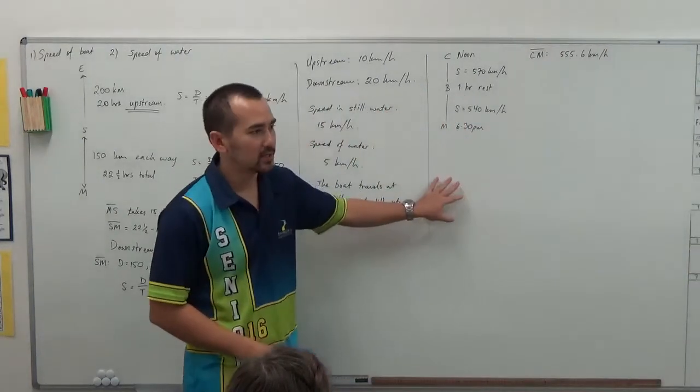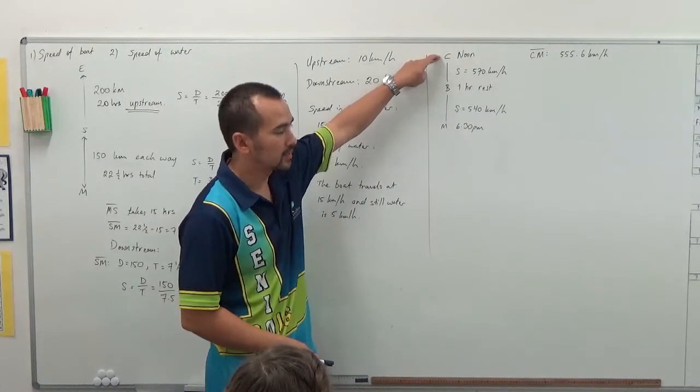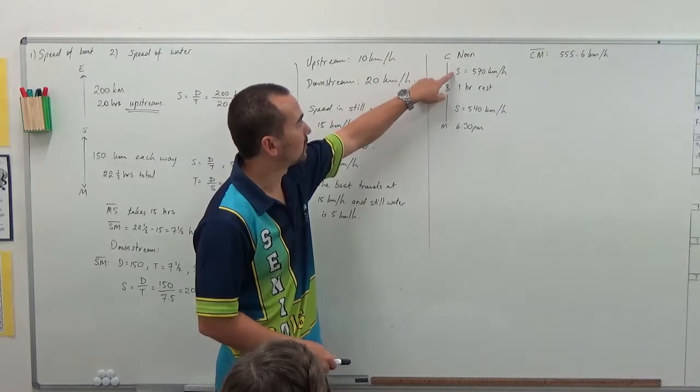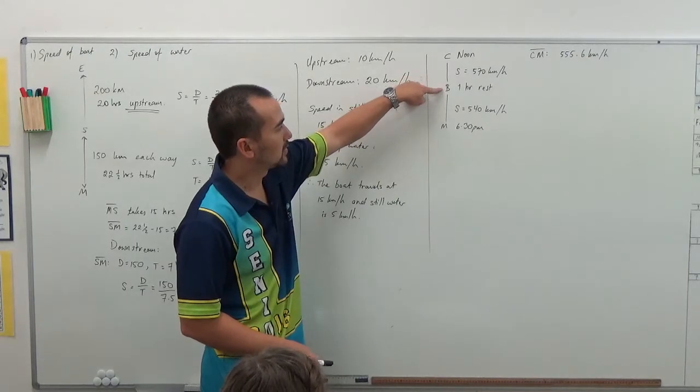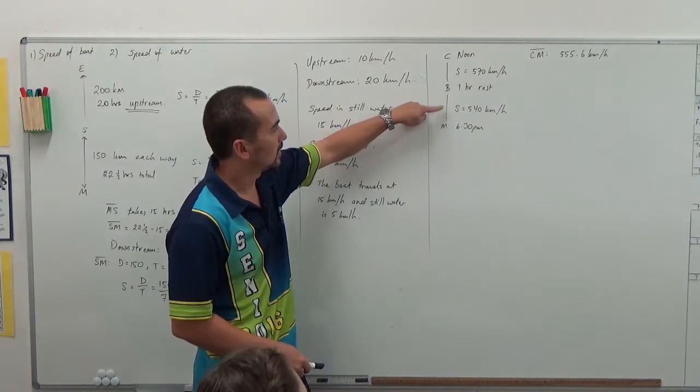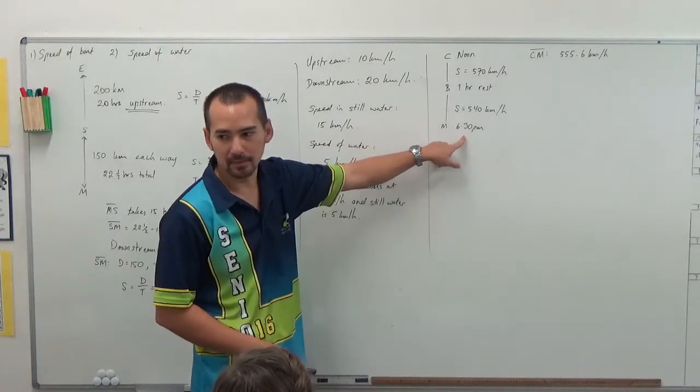So let's have a go with this A-level question. The context is that a plane is leaving from Cairns to Brisbane. It leaves at noon traveling at a speed of 570 km an hour. At Brisbane it rests for one hour. Then it travels to Melbourne at a speed of 540 km an hour and lands at 6:30 pm.